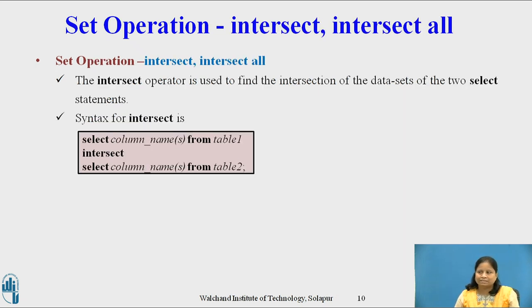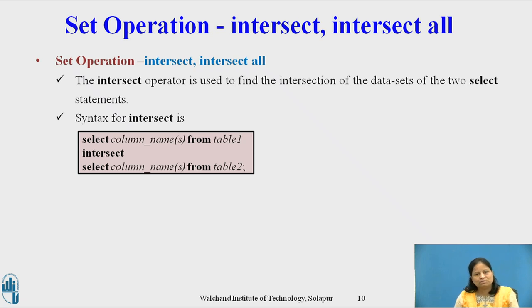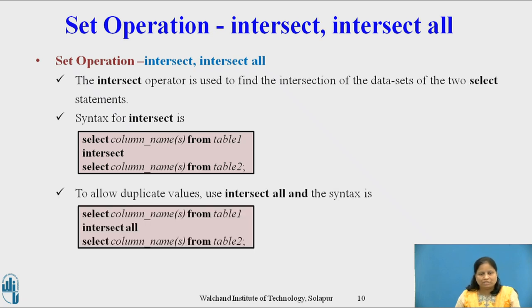Set operation Intersect and Intersect All. The Intersect operator is used to find the intersection of the data sets of two SELECT statements. The number and type of fields present in the two data sets must be the same. The Intersect clause produces distinct values in the result set, and to fetch duplicate values too, Intersect All must be used. The syntax for Intersect is: SELECT COLUMN_NAME FROM TABLE1 INTERSECT SELECT COLUMN_NAME FROM TABLE2. The syntax for Intersect All is: SELECT COLUMN_NAME FROM TABLE1 INTERSECT ALL SELECT COLUMN_NAME FROM TABLE2.